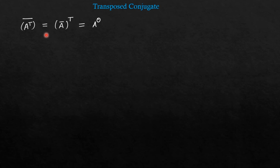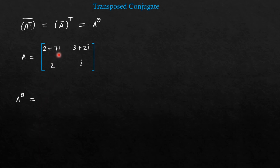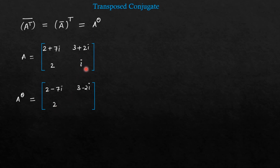Let me take an example. Let us say we have a matrix A whose elements are 2 plus 7 iota, 3 plus 2 iota, 2, and iota. So in order to find A theta — or the transposed conjugate — we will have to perform two operations: transpose as well as conjugate. Let me first perform the conjugate. So 2 plus 7 iota will become 2 minus 7 iota because the sign of the imaginary part will change. Here 3 plus 2 iota will become 3 minus 2 iota. And 2 is a real number so it will remain as it is. And iota is a pure imaginary number, so it will become minus iota.